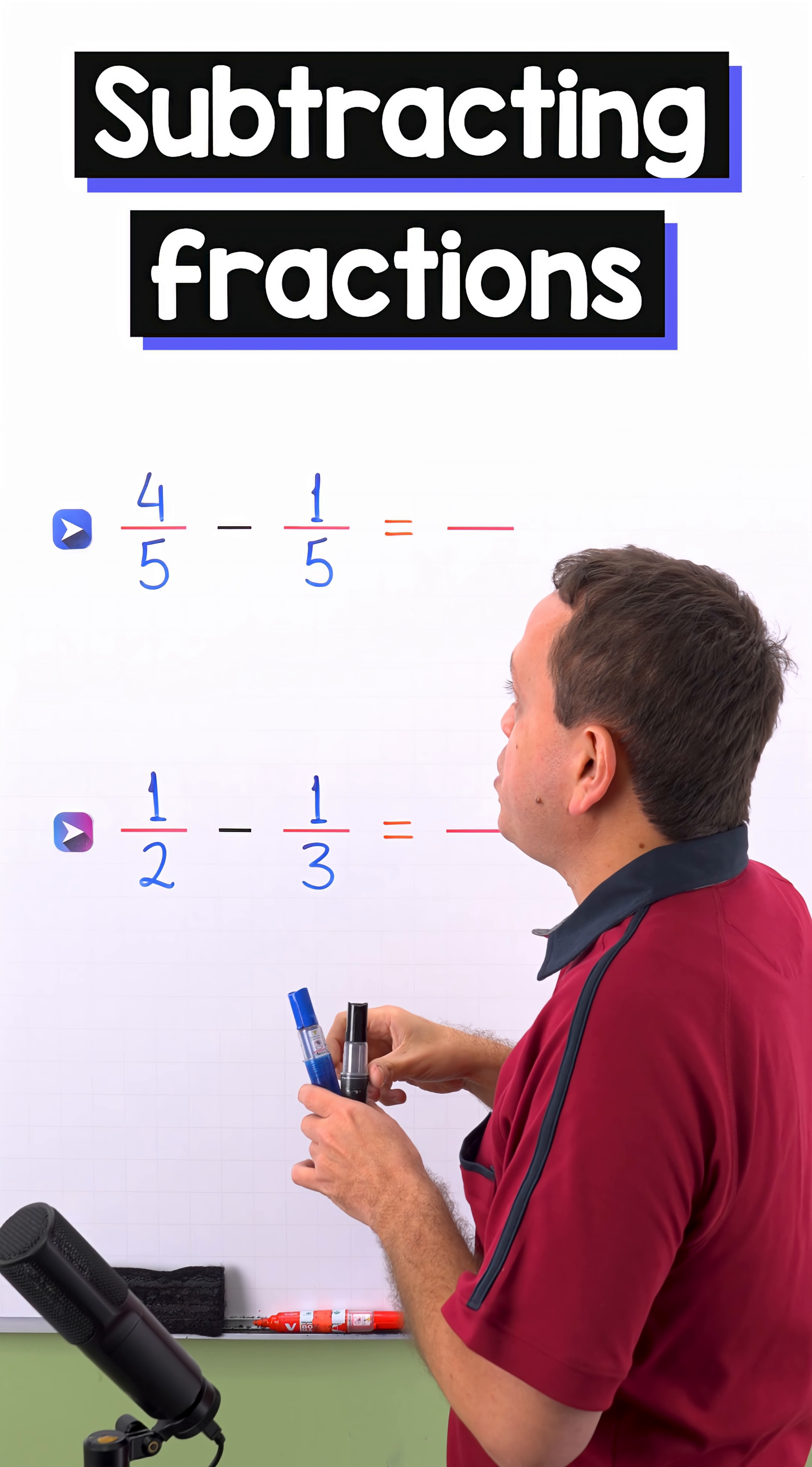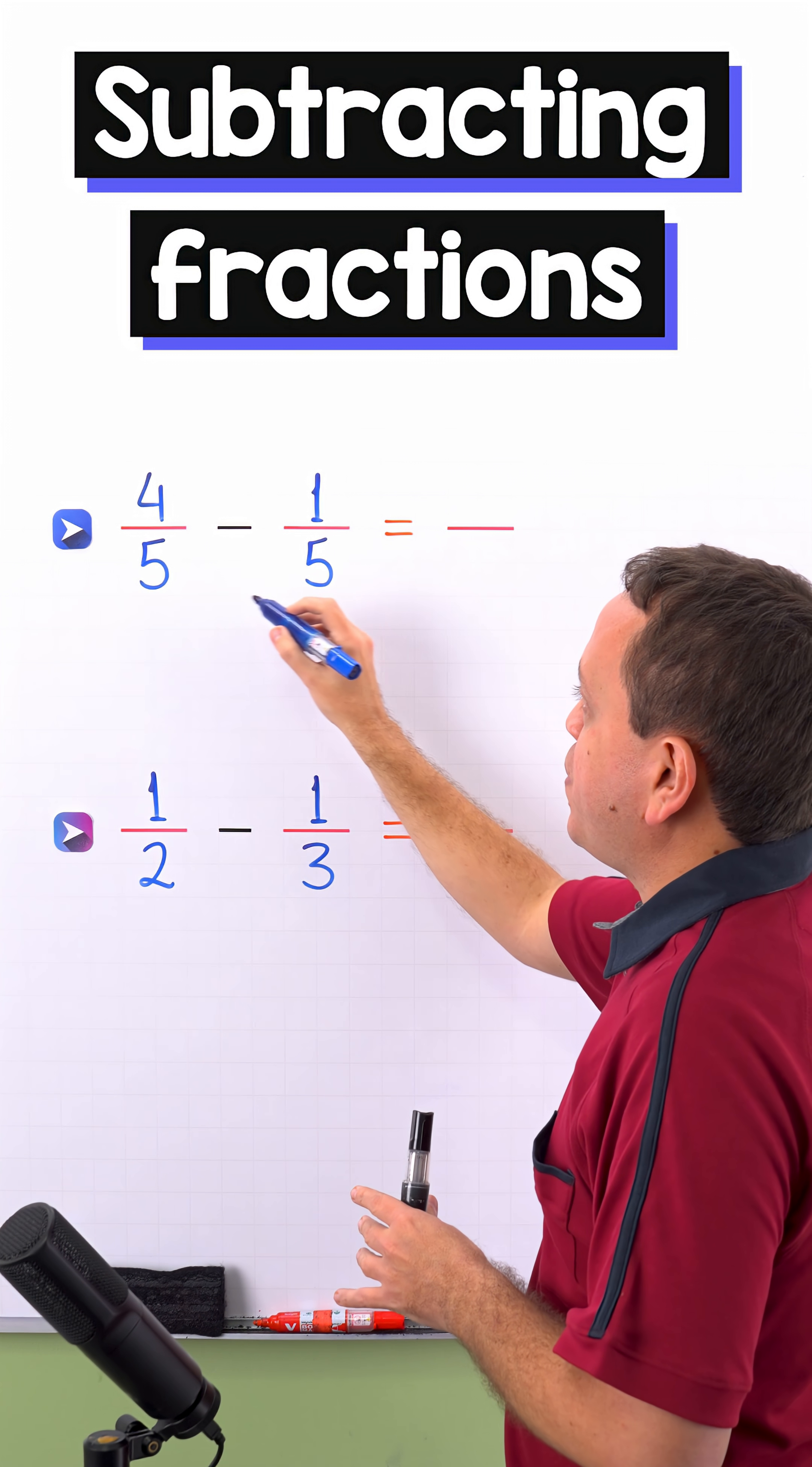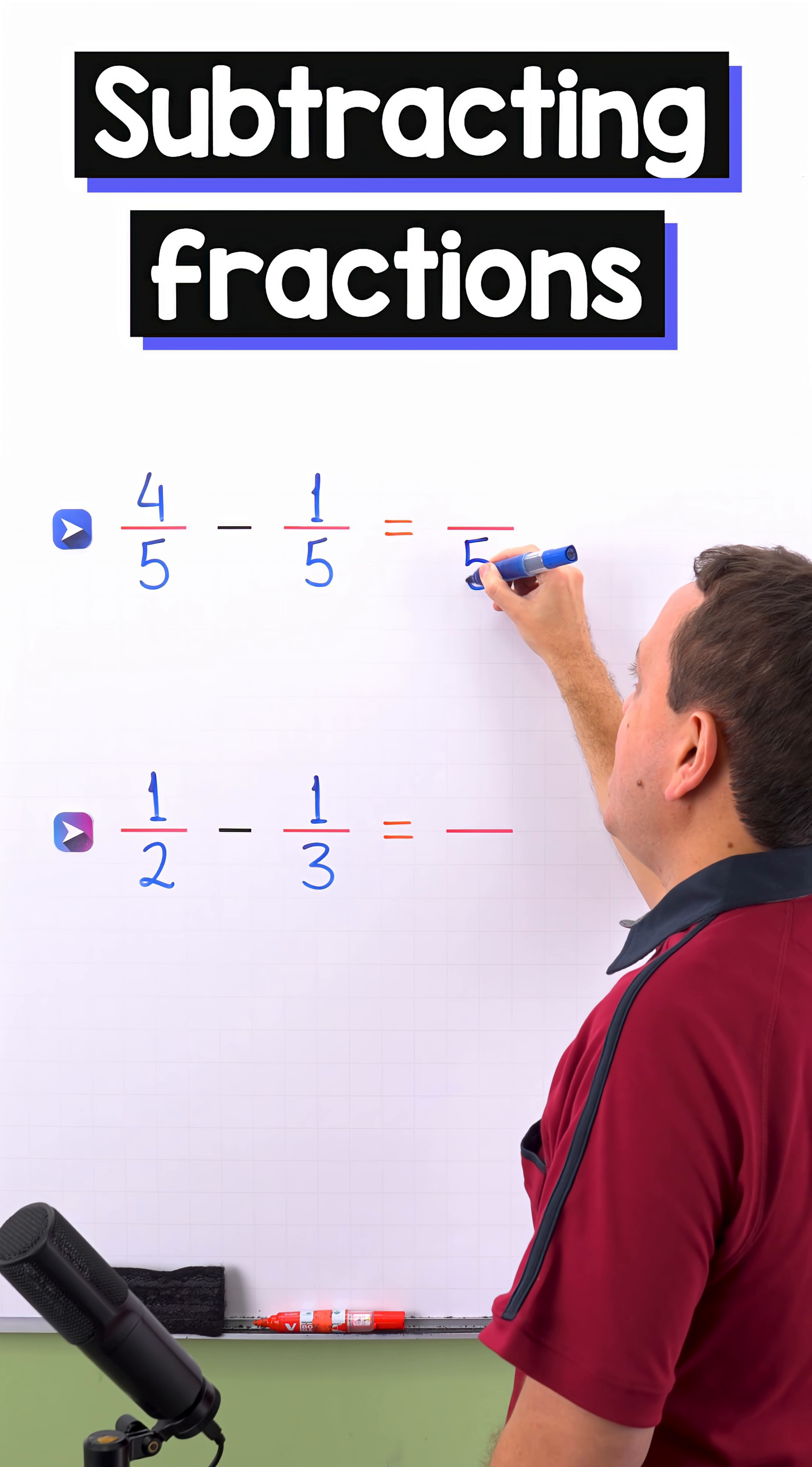In the first example, we're going to subtract 4 fifths minus 1 fifth. These two fractions have the same denominator because we have 5 on the left and 5 on the right. Then we can put 5 on this side.